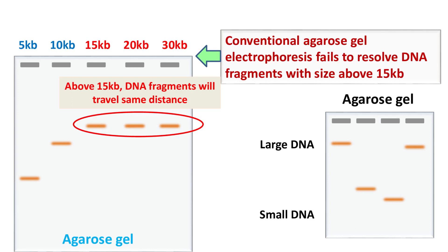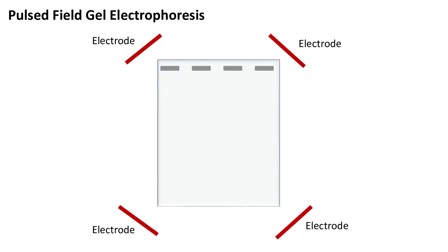To solve this problem, scientists came up with a new idea known as Pulsed Field Gel Electrophoresis. In this technique, an alternating electric field is applied at an angle of 120 degrees.